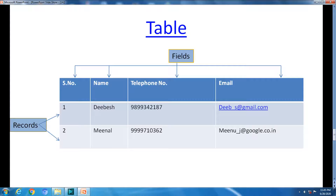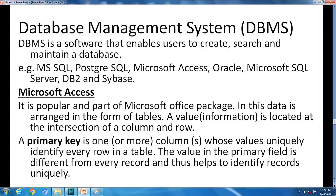Each field contains information of the same type for all entities. For example, the field 'email' contains the email address for each entity. DBMS — Database Management System — is software that enables users to create, search, and maintain a database. Examples include MS SQL, PostgreSQL, Microsoft Access, Oracle, Microsoft SQL Server, DB2, and Sybase.